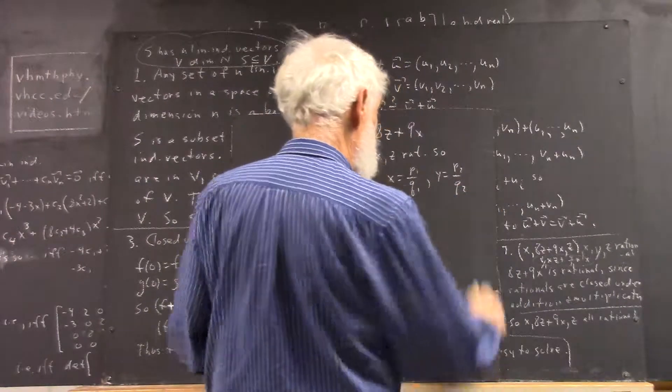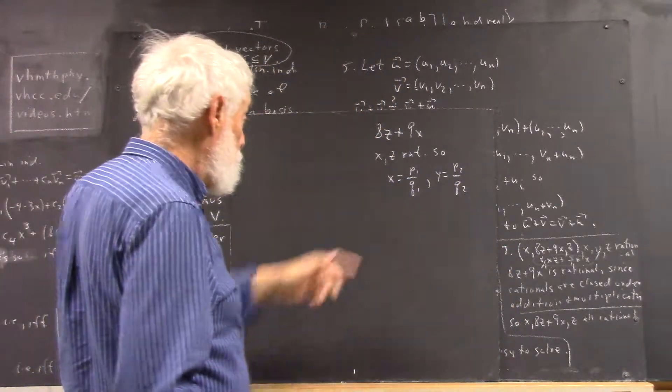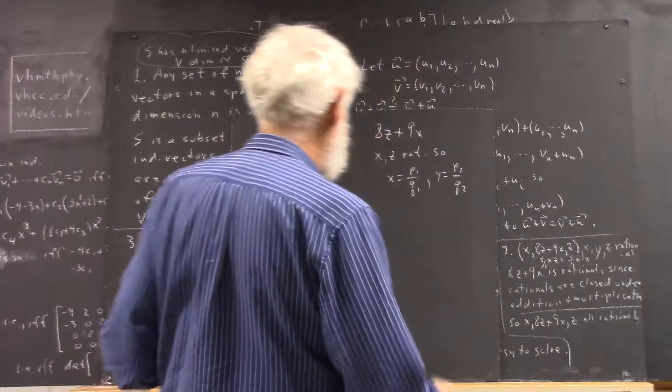Because, remember, a rational number is basically a fraction with integers, right? Okay, p1, q1, p2, and q2 are integers.